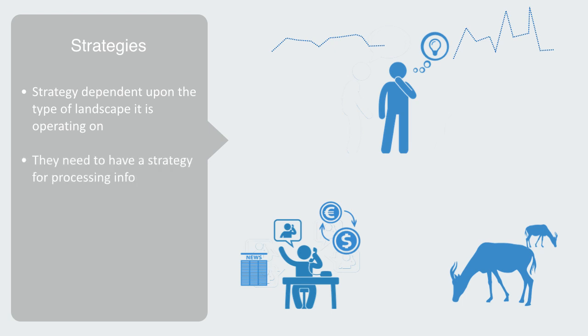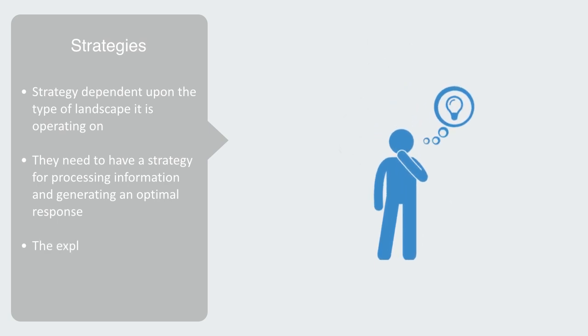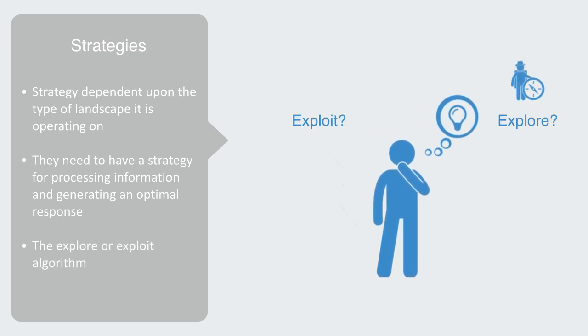This strategy is essentially just an algorithm. We will call this the explore or exploit algorithm, because an agent has fundamentally just two options: to either exploit their current position within the landscape or invest resources to go exploring for new solutions, that is to say, looking for higher peaks.